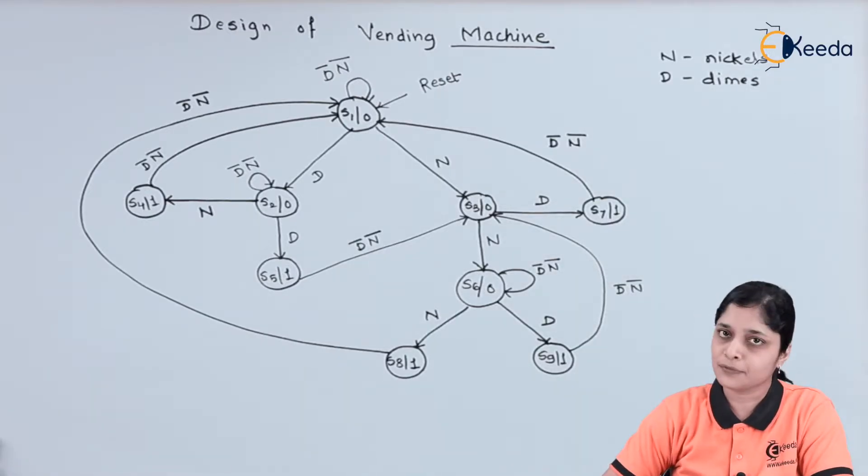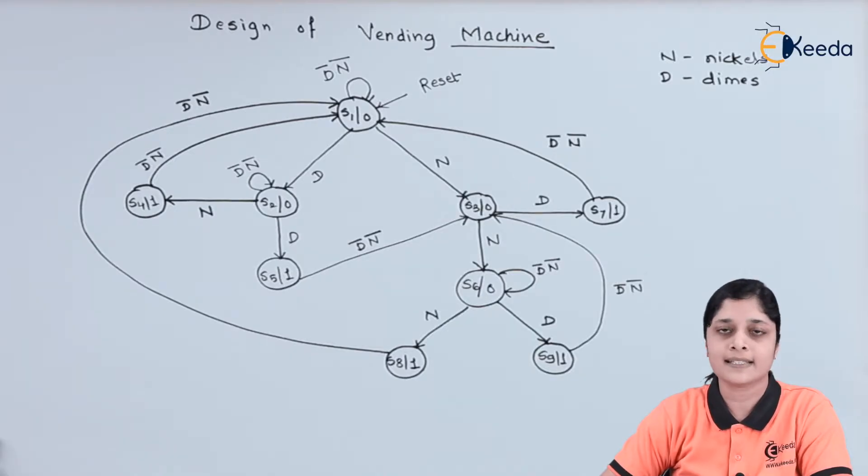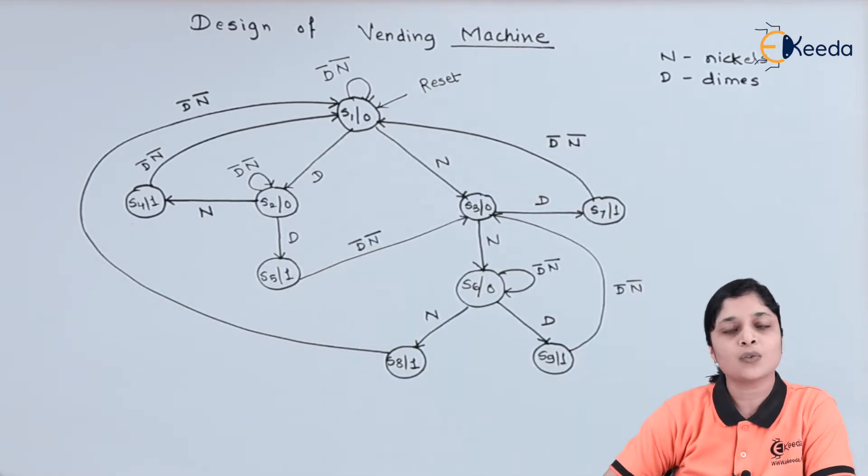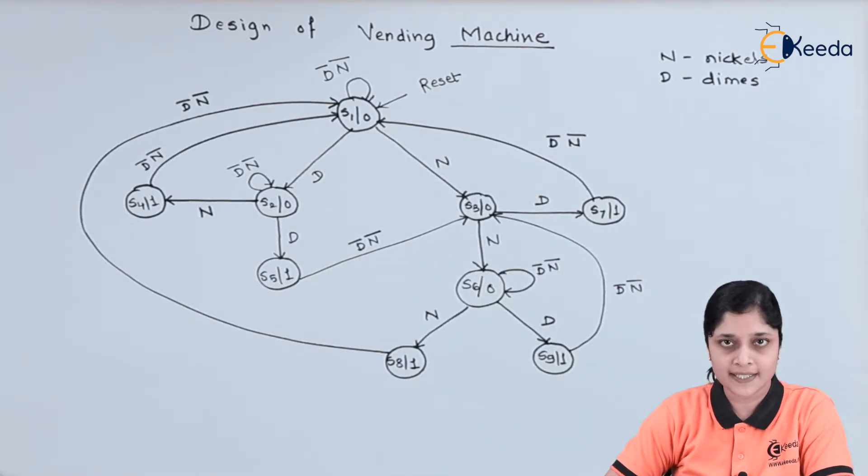The value of nickels is 5 cents and value of dime is 10 cents. This vending machine gives us candy if the total value is 15 cents.